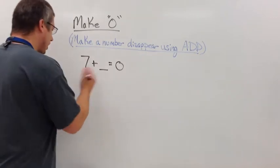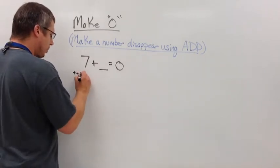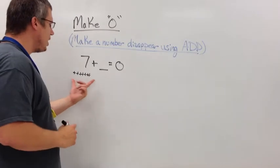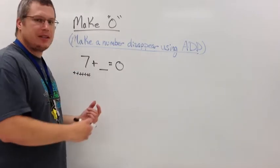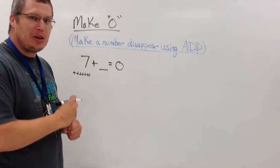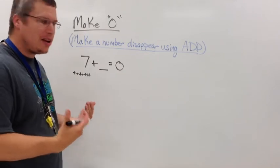If I were to draw this out, seven positives—one, two, three, four, five, six, seven—what number would I have to add to positive seven to make a value of nothing? In essence, make the number disappear.